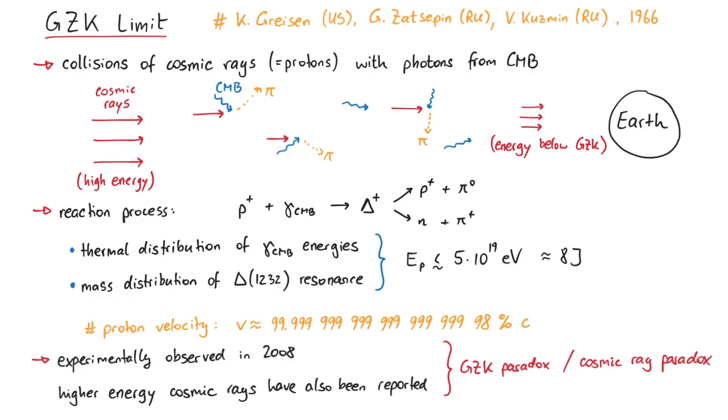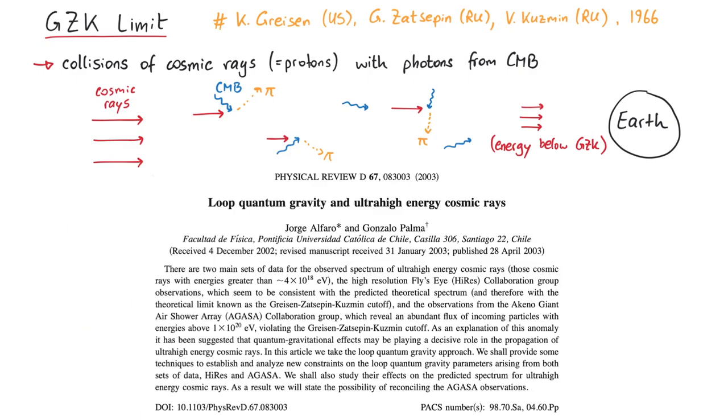For instance, one paper suggests that a possible explanation of the GZK paradox is that at such high energies, quantum gravitational effects might be necessary. This paper calculated the GZK limit using loop quantum gravity, and indeed found a higher limit, which would allow cosmic rays with energies above the usual GZK limit.